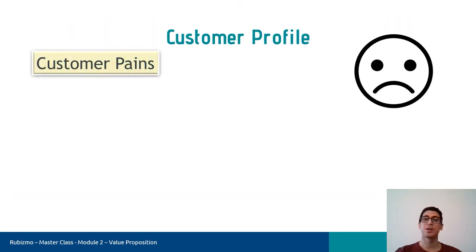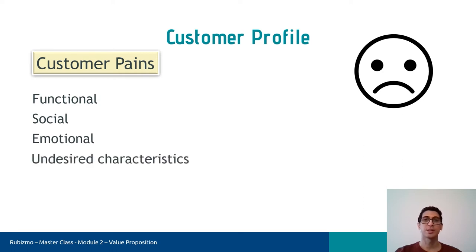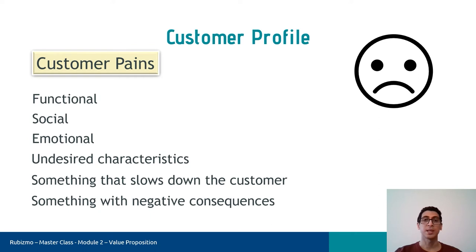The next block is the customer pains. Pain is whatever, before, during, and after getting a job done that annoys customers. We have different types of pains, for example, functional, social, emotional, undesired characteristics such as an ugly design, something that slows down the customer, for example, I lack the time to get a job done accurately, and finally, something with negative consequences. For instance, people may lose credibility if a company uses a special way to solve a problem. And like the jobs that can be crucial and insignificant, pains can be extreme or moderate.